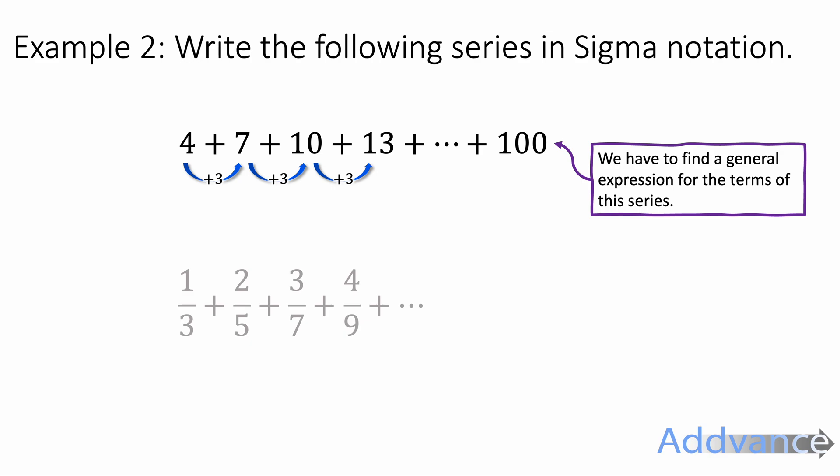And we have to find the general expression for the terms in this series. So you should see that it's going up in 3's each time. And if you go backwards one term, we should get 1.